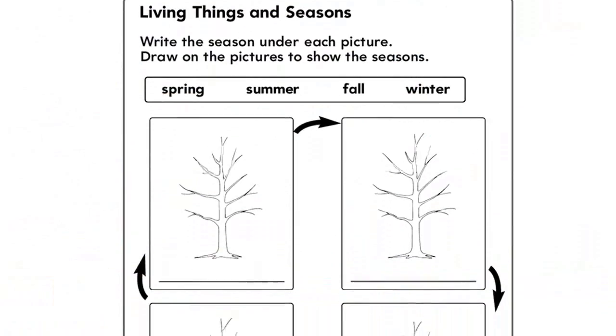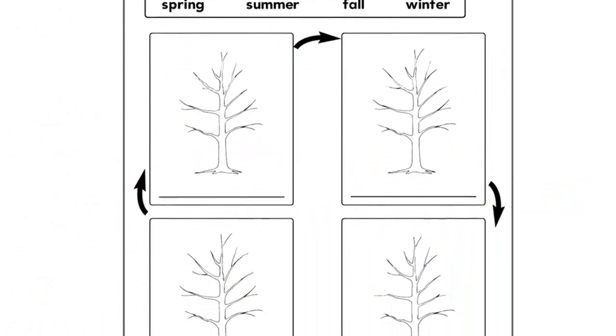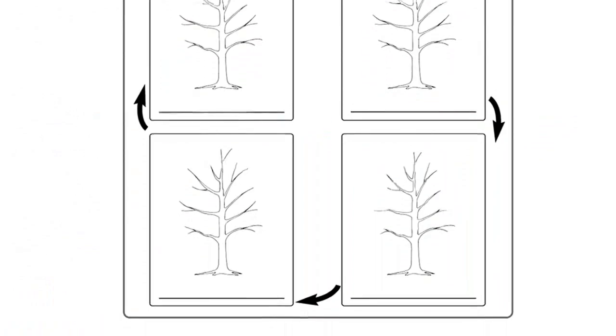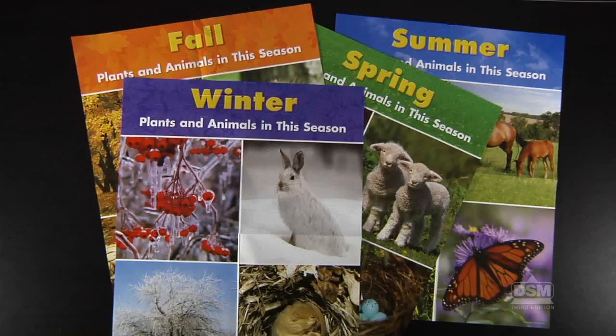To prepare for session two, make a copy of Activity Sheet 8 for each student and set up the seasons poster where all students can see.